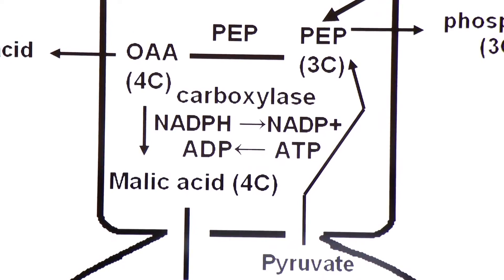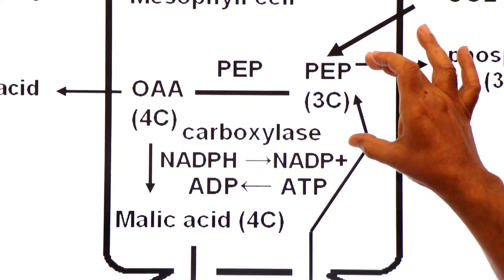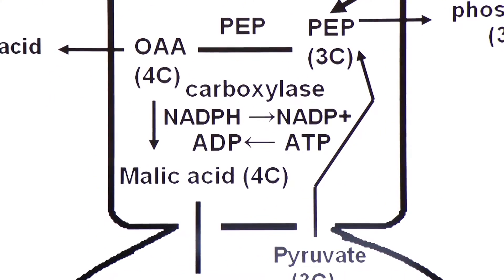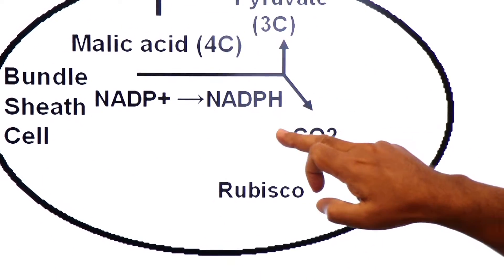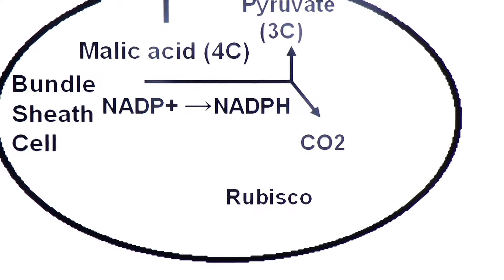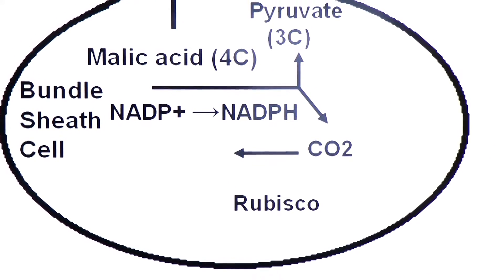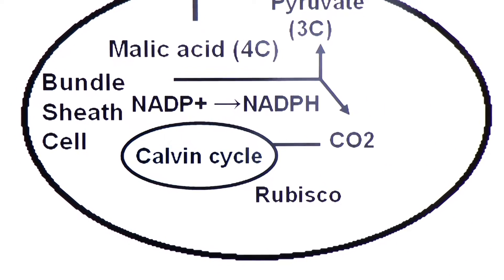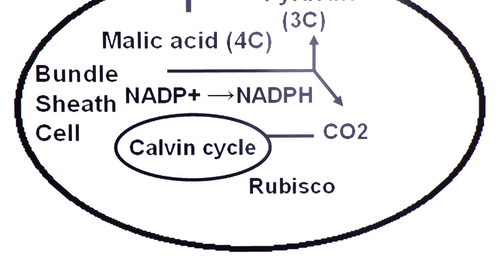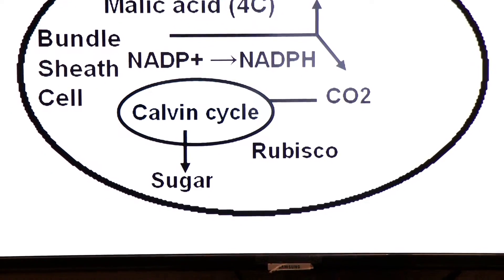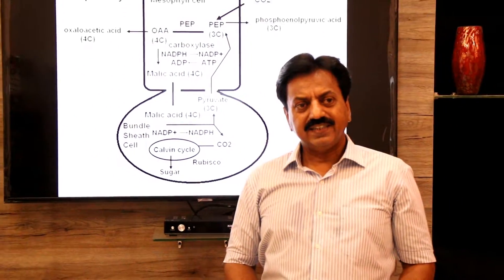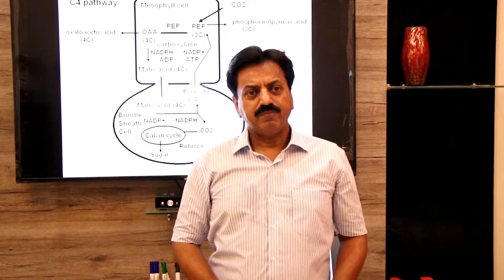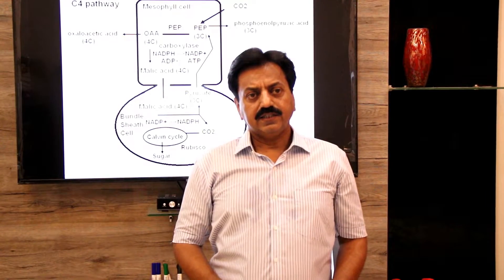So here PEP is regenerated. In the last step ATP is consumed. The carbon dioxide produced from malic acid goes to the Calvin cycle here, where it produces glucose — sugar. So that was the C4 pathway in C4 plants — the alternative mode of CO2 fixation.